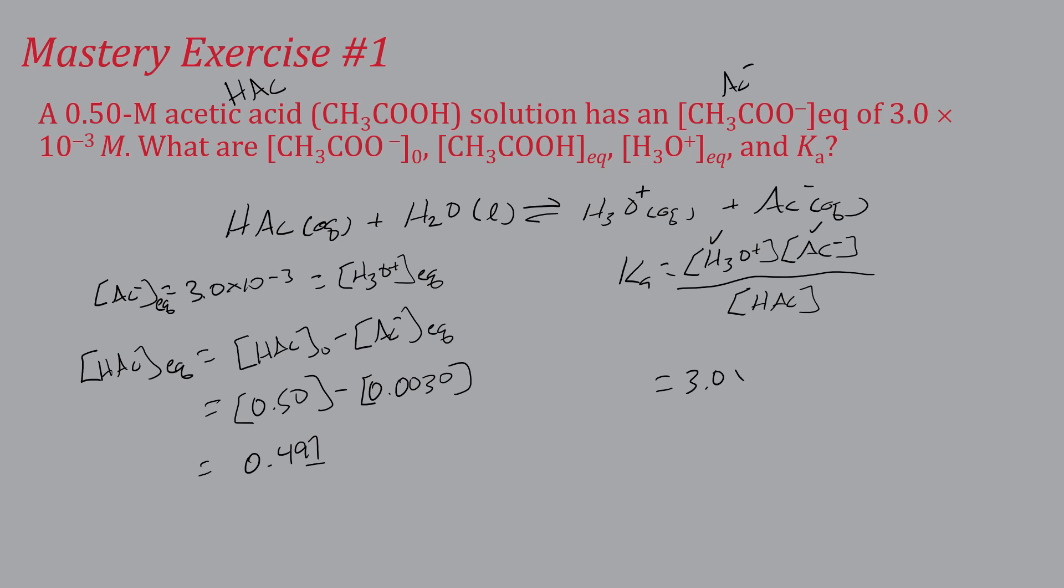And now we know all these numbers. We just plug them into here. So we've got 3 times 10 to the minus 3 squared, all over 0.497. And to 2 sig figs, which is the proper number here, this gives us 1.8 times 10 to the negative 5. And that is Ka for vinegar or acetic acid.